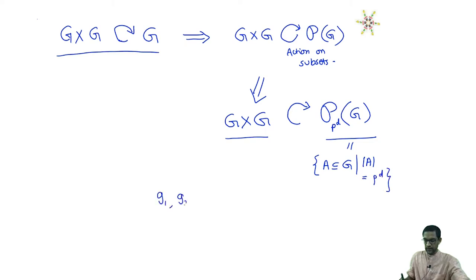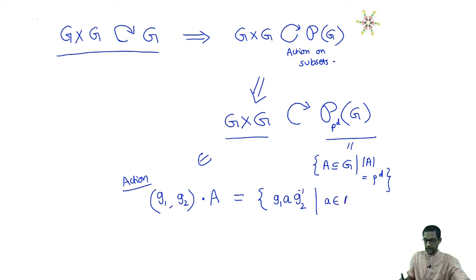To recall what that action is: if I give you a pair (G1, G2) in G cross G, its action on the subset A gives me a new subset whose elements look like this — it takes every element of A and applies the two-sided action to it. I get G1 times small a times G2 inverse for every element small a in capital A. Taking the collection of all such elements gives another subset whose cardinality is P power D — that subset is what the action gives you.